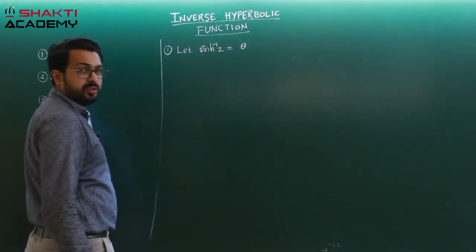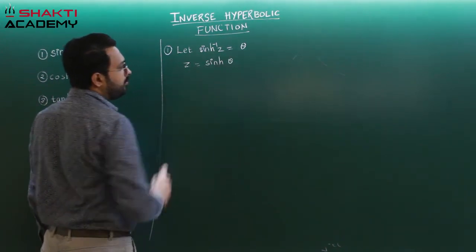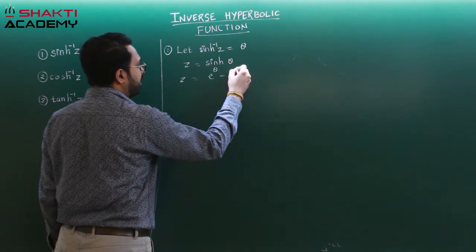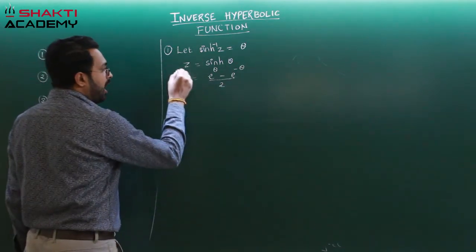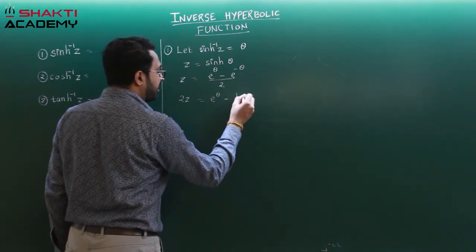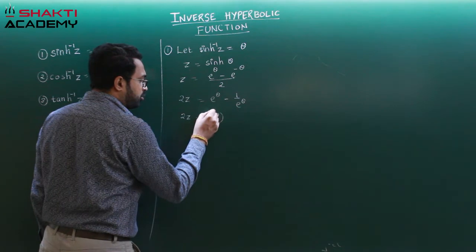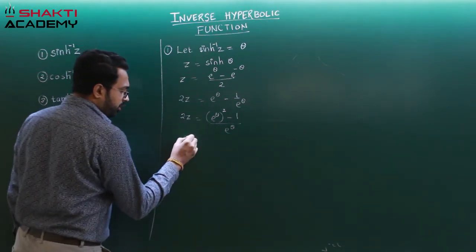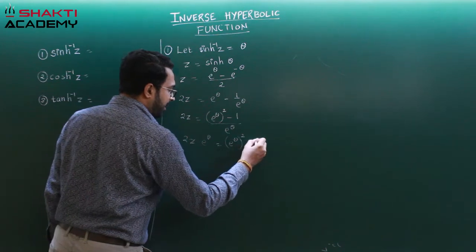So z becomes equal to sinh(theta). Now we have studied that sinh(theta) is equal to (e^theta minus e^(-theta)) divided by 2. So 2z equals e^theta minus e^(-theta), which we can write as e^theta minus 1 upon e^theta. Cross multiplying, 2z·e^theta equals e^(2theta) minus 1.